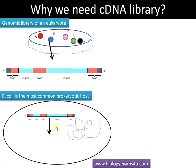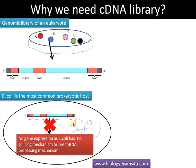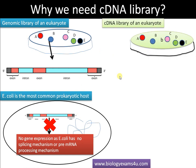When introducing this eukaryotic gene inside E. coli, E. coli doesn't have a mechanism to splice out the introns and join the exons — because in bacteria, genes consist of only exons. So in order to express a eukaryotic gene inside a prokaryotic system, we find it difficult when using a genomic library, as bacteria lacks the mechanism to splice out introns and join exons.